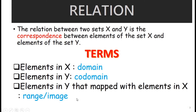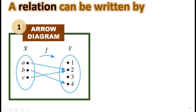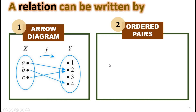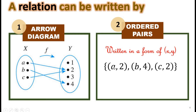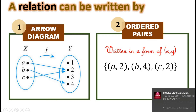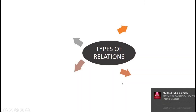A relation can be written using an arrow diagram — we have set X in one circle and set Y in another, and we map the two sets with arrows. For example, A is mapped to 2, C is mapped to 2, and B is mapped to 4. Another way to write a relation is in ordered pairs in the form (x, y). From the diagram: A is the object and 2 is the image, B is the object and 4 is the image, C is the object and 2 is the image.